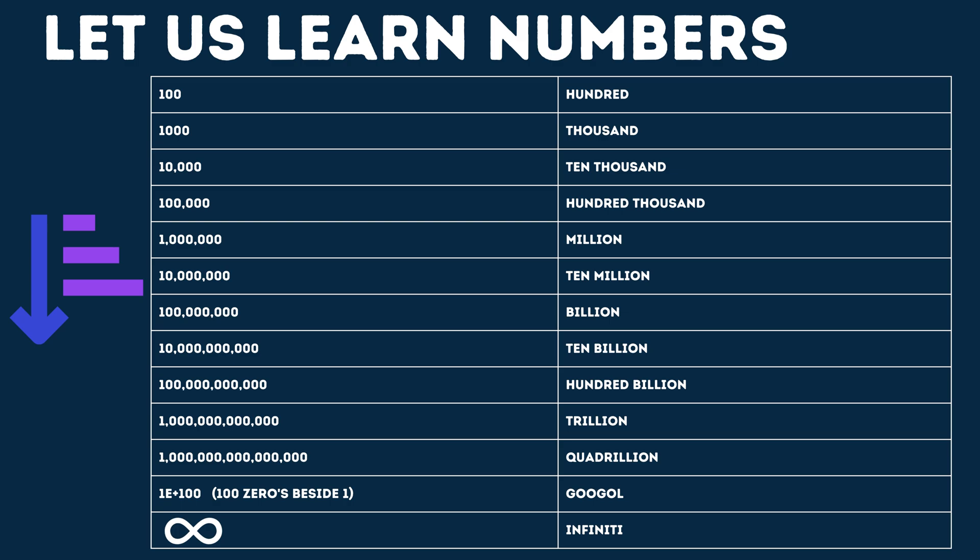Then the biggest number we call it is infinite. Let me sum up. These numbers we learnt are in ascending order, meaning lowest to highest — zero to infinity.